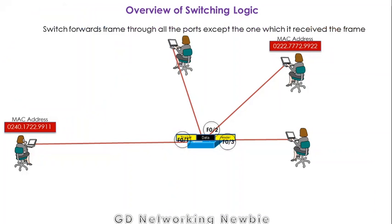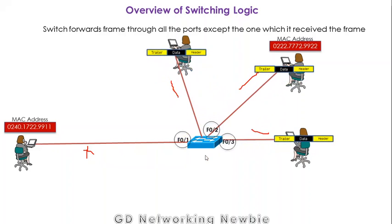Because the destination MAC address is unknown, the switch forwards the frame not only to the required destination but to all connected nodes — all nodes except the one from which the frame was received. A copy of the frame is sent to all nodes. This process is known as flooding.